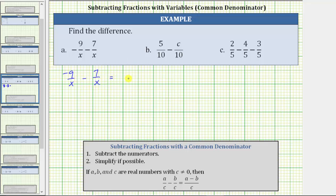The denominator remains x and we subtract the numerators, which gives us negative nine minus seven. Negative nine minus seven is equal to negative 16. The difference is negative 16 over x. Remember, negative nine minus seven is equal to negative nine plus negative seven, which equals negative 16. And this fraction does not simplify.